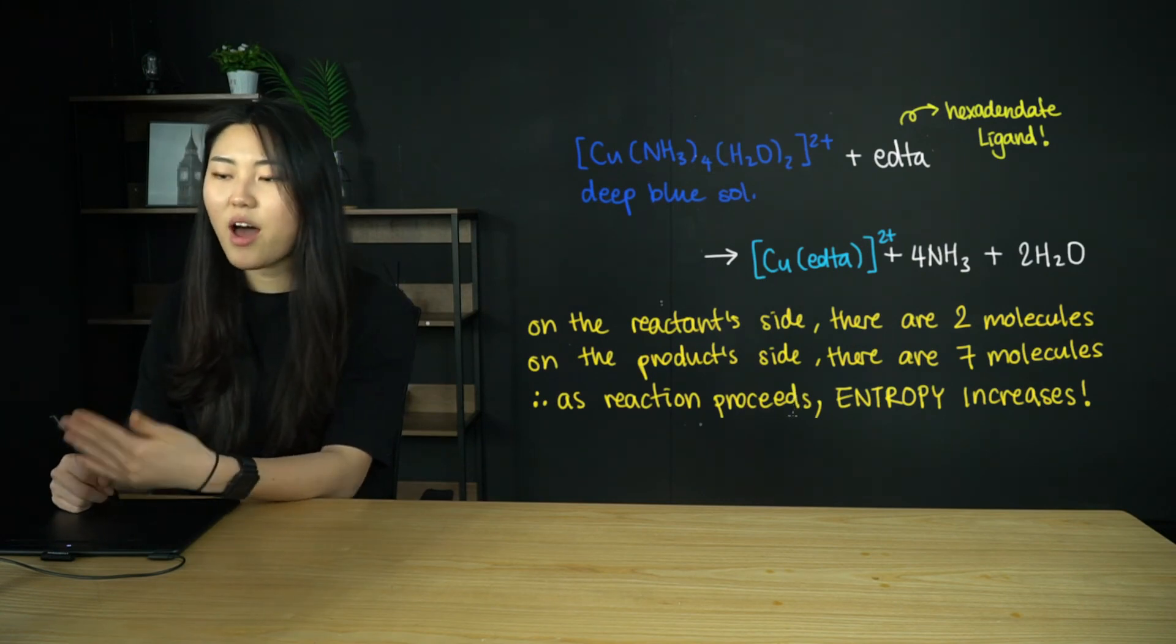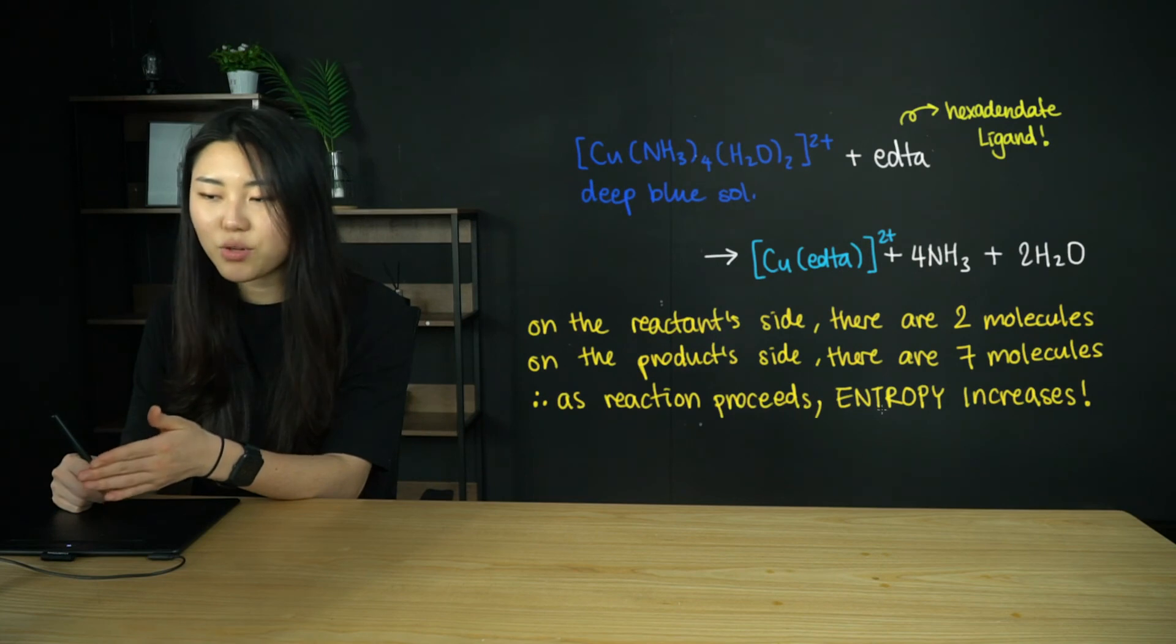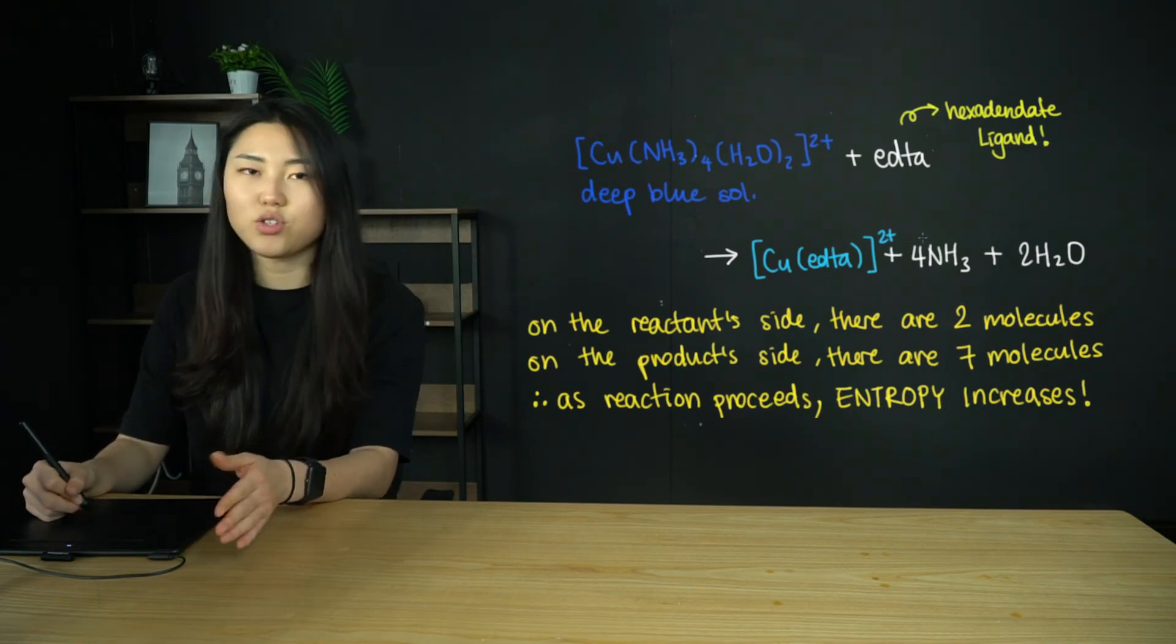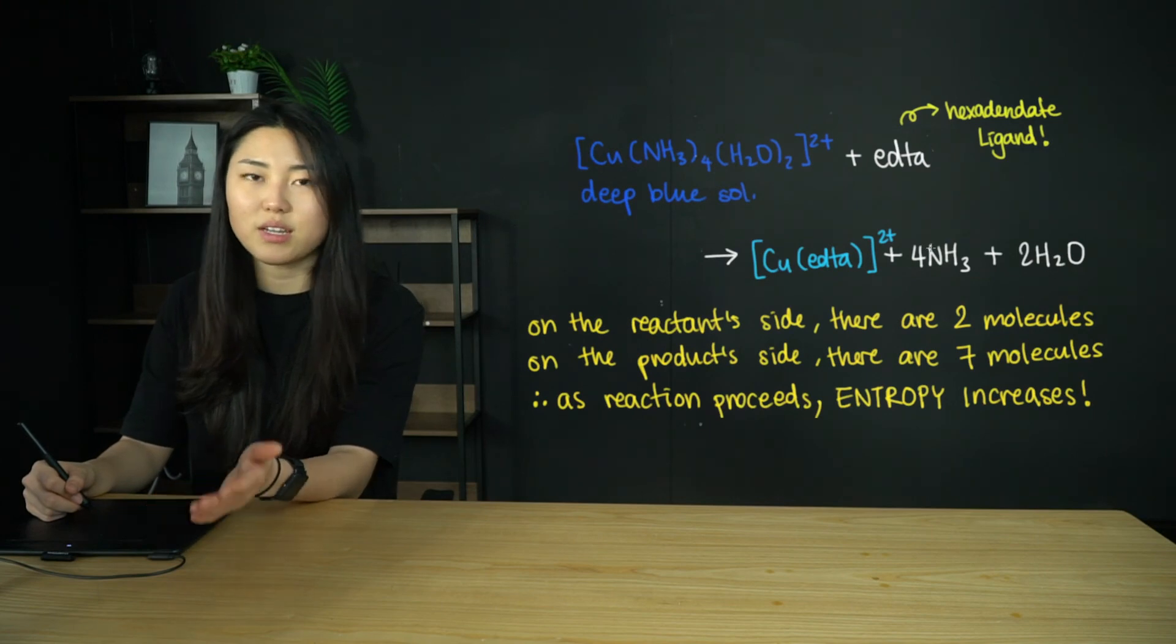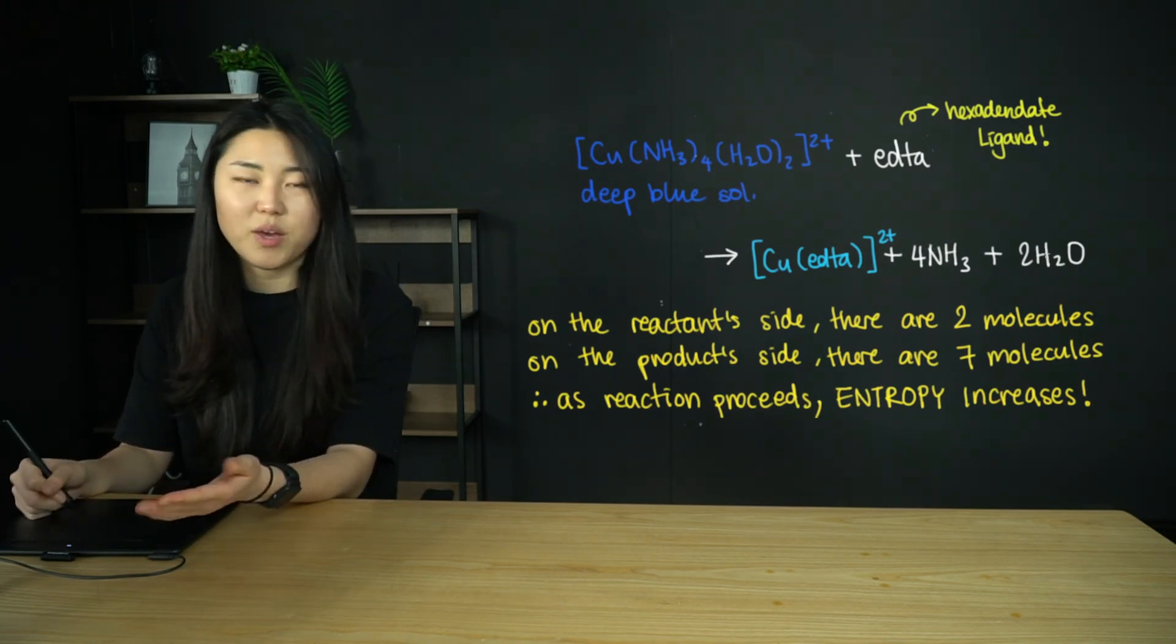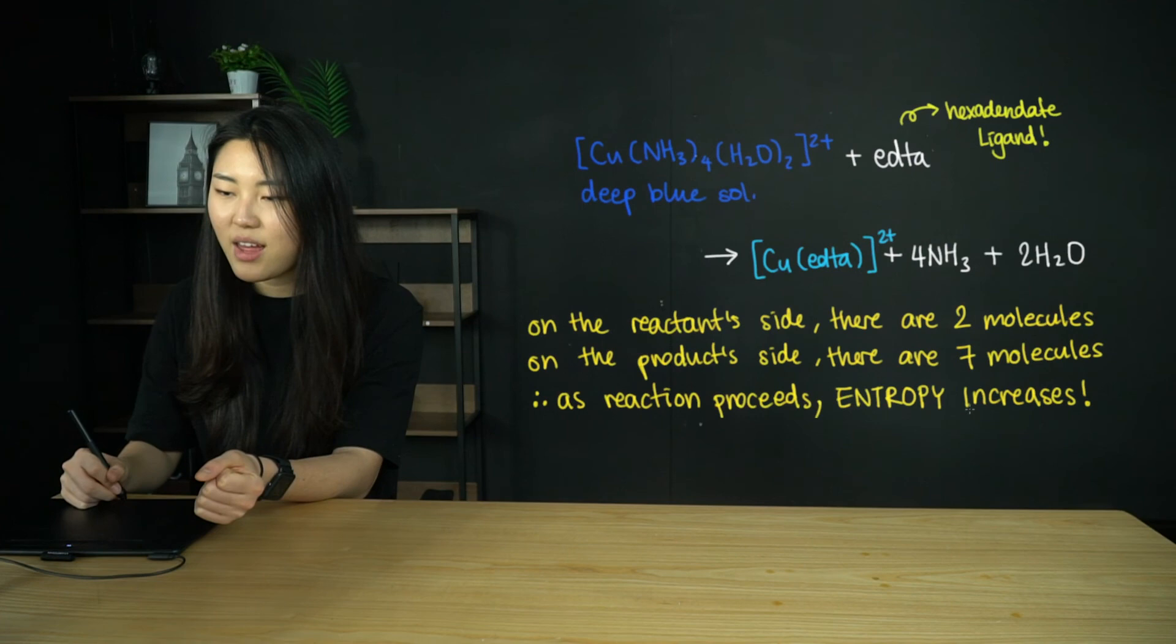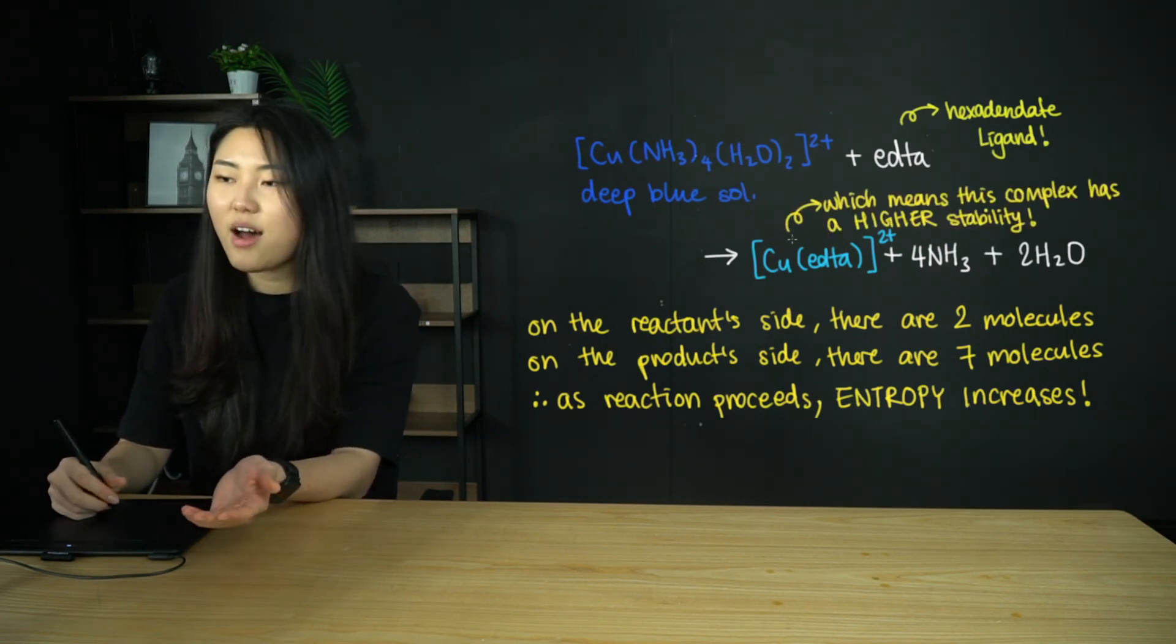Therefore, as the reaction proceeds, because we have more molecules, entropy is going to increase. Entropy is the measure of disorder of a system, or the different ways of arranging all the molecules inside a system. Because we have more molecules, we have more ways to arrange them, so the entropy is going to be increasing.